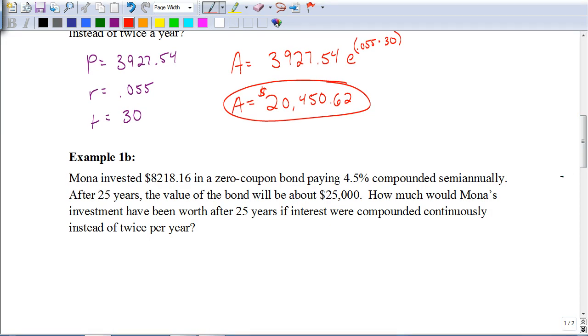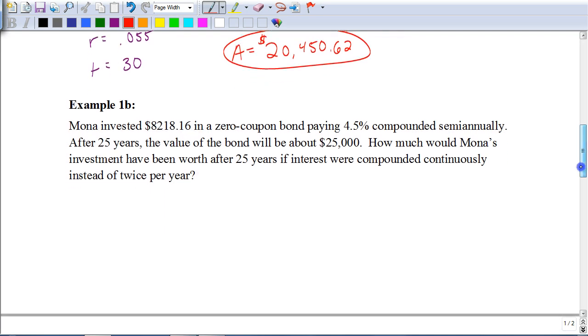It says Mona invested $8,218.16 in a zero-coupon bond, paying 4.5% compounded semi-annually. After 25 years, the value of the bond will be about $25,000. Actually, let's stop there for a second. We forgot to talk about that.